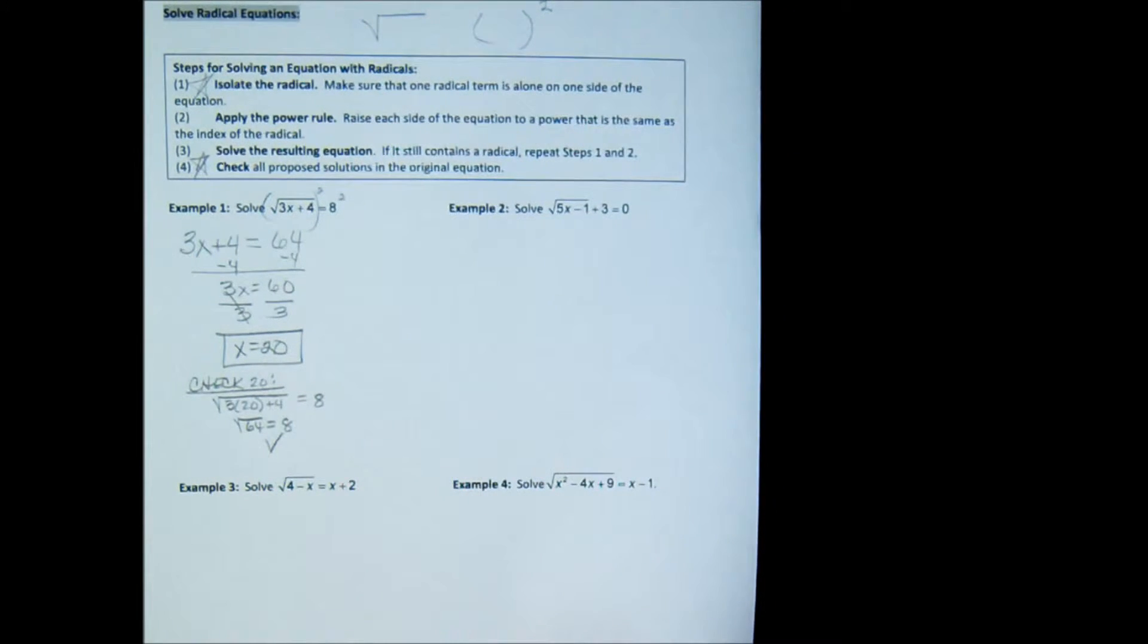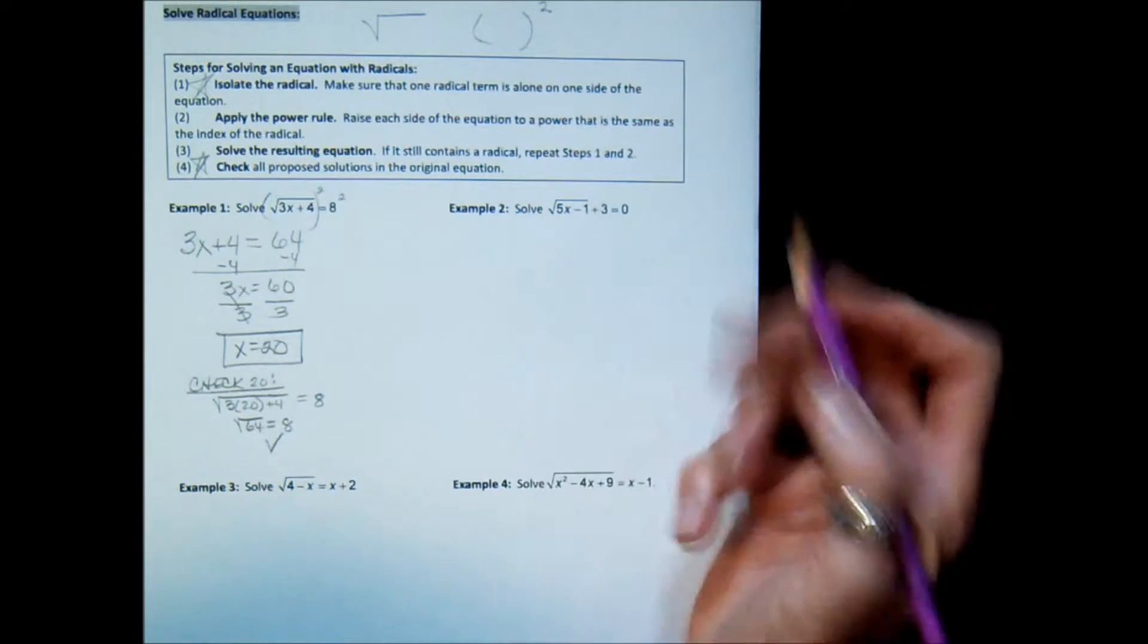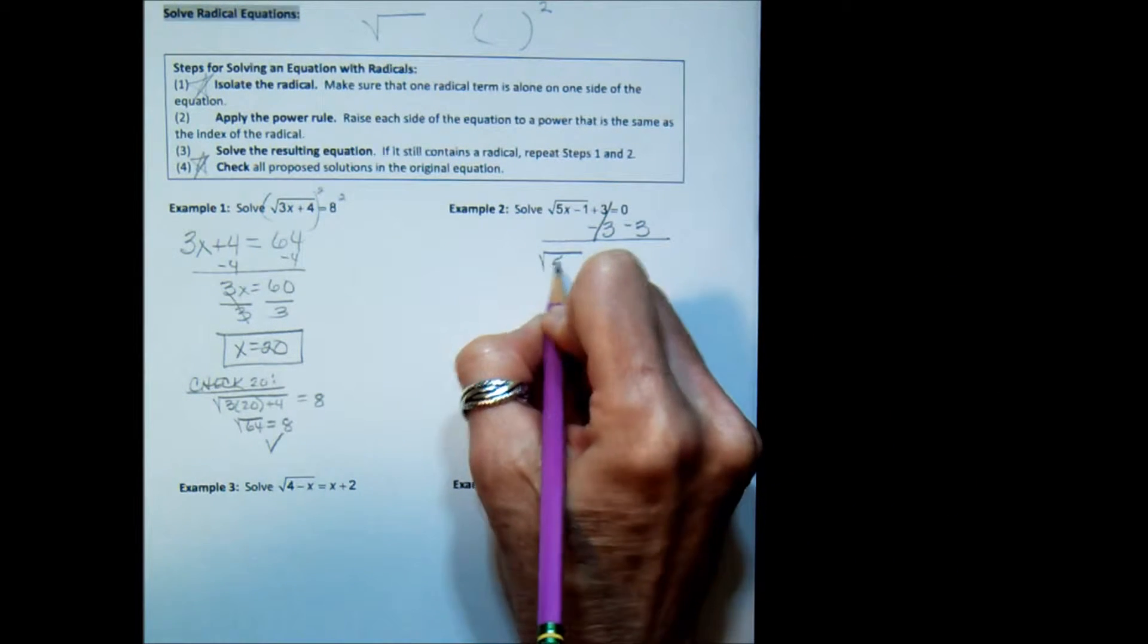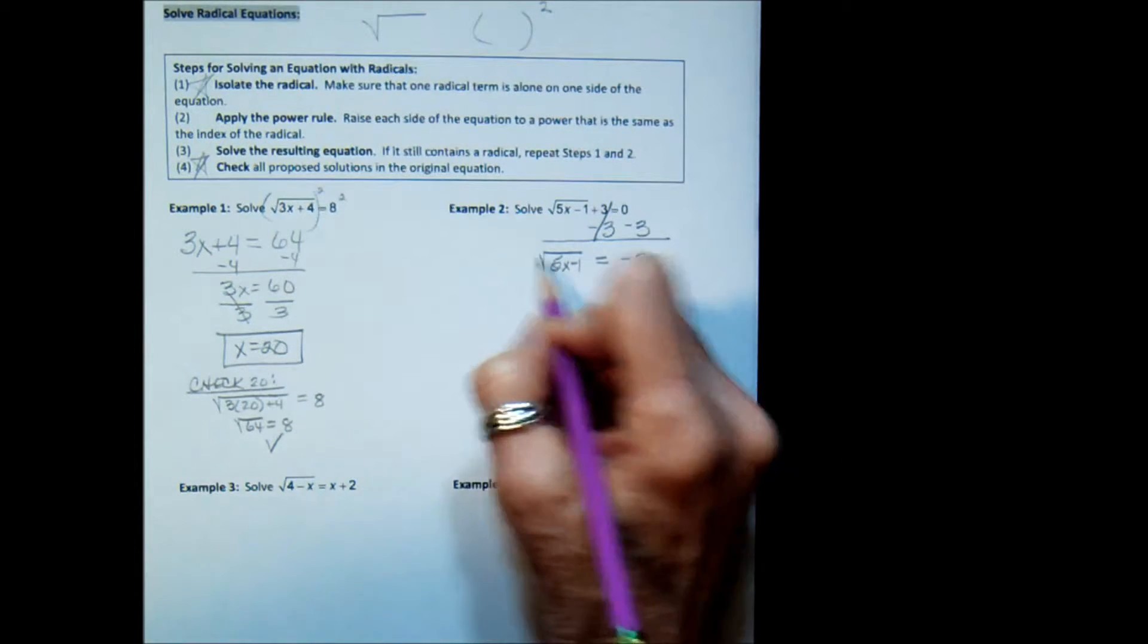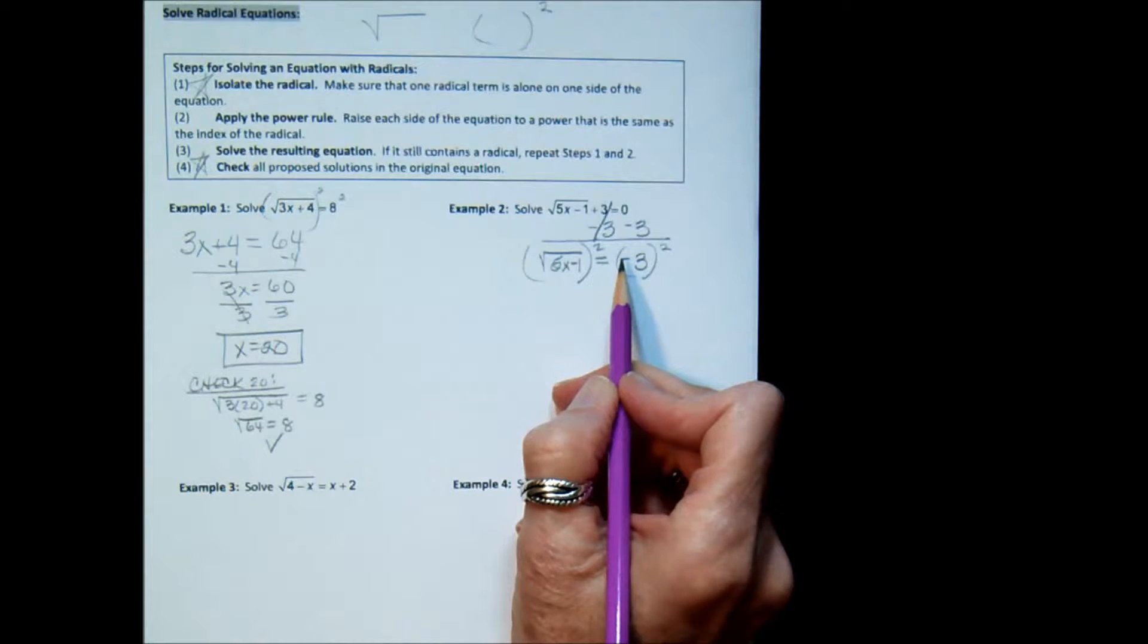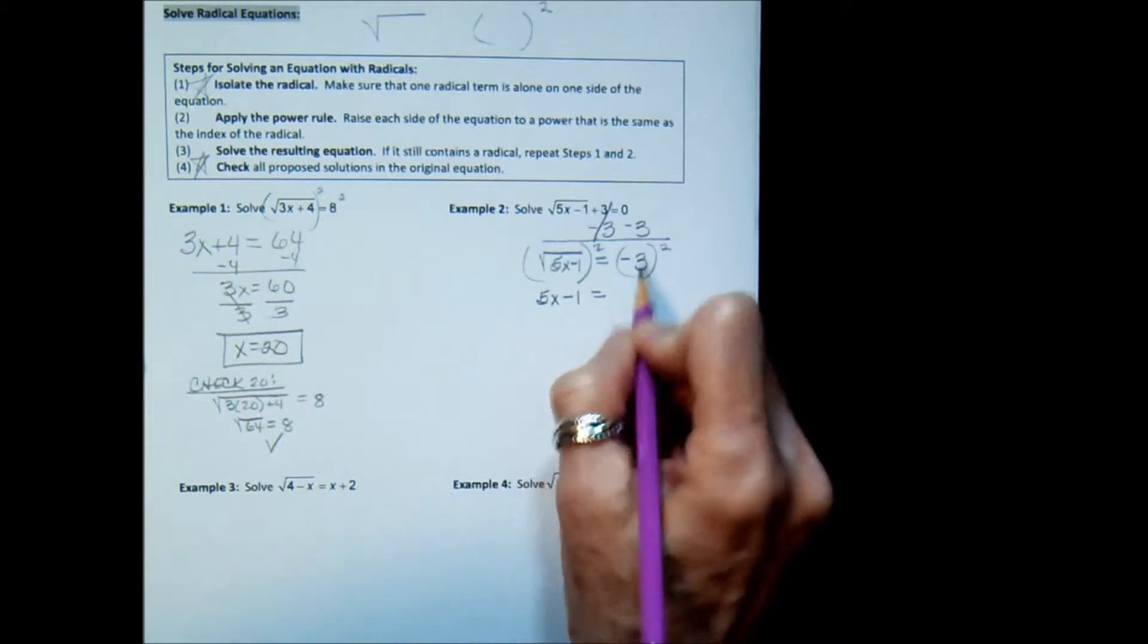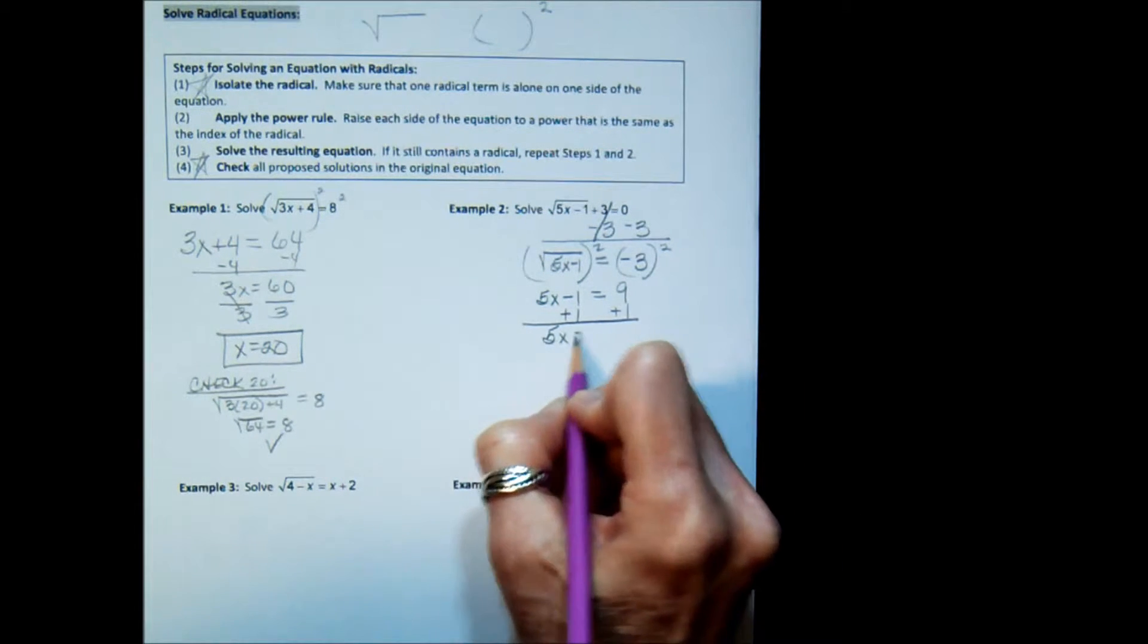Let's look at another one. First step, is the radical isolated? No it's not because I have a plus 3 here. So in order to isolate that radical, I'm going to subtract a 3 from both sides. That gives me square root of 5x minus 1 equals negative 3. Now we're going to square both sides. Notice that included the negative, getting squared here. The square root of 5x minus 1 all squared is just 5x minus 1 equals 9.